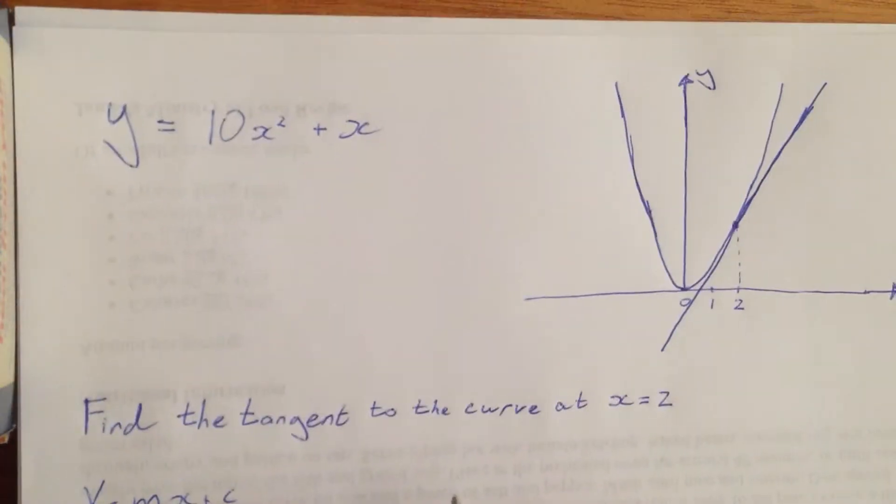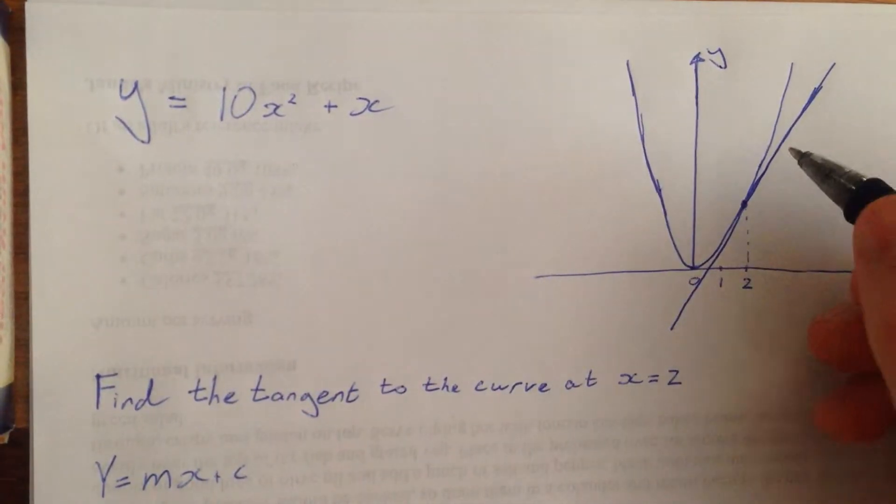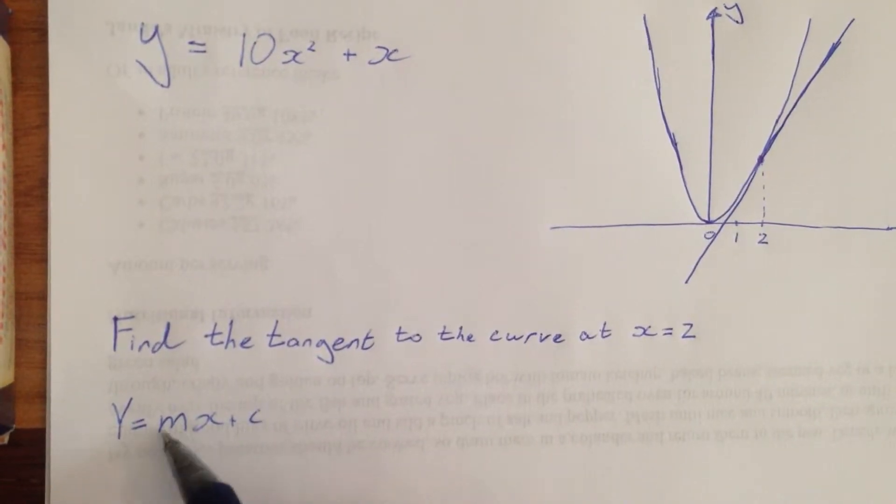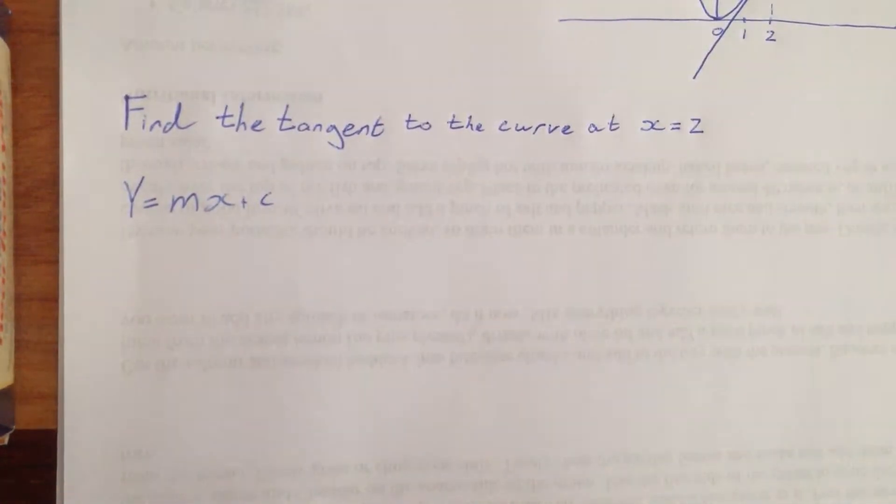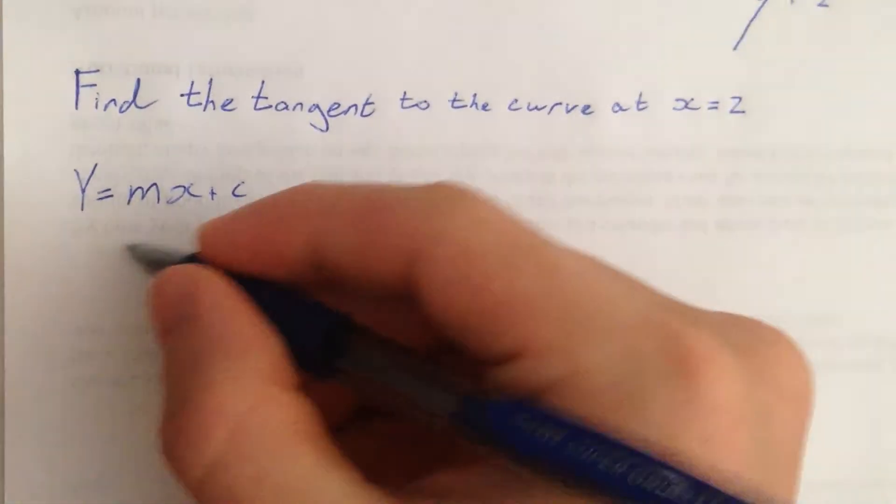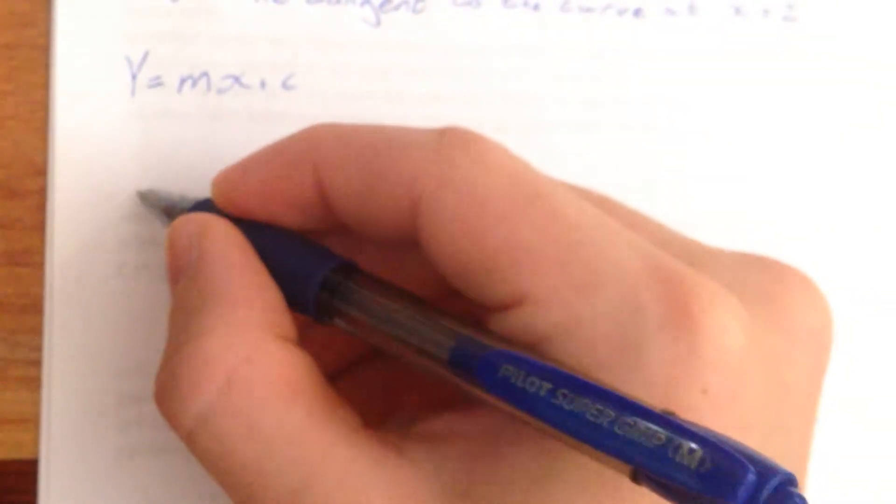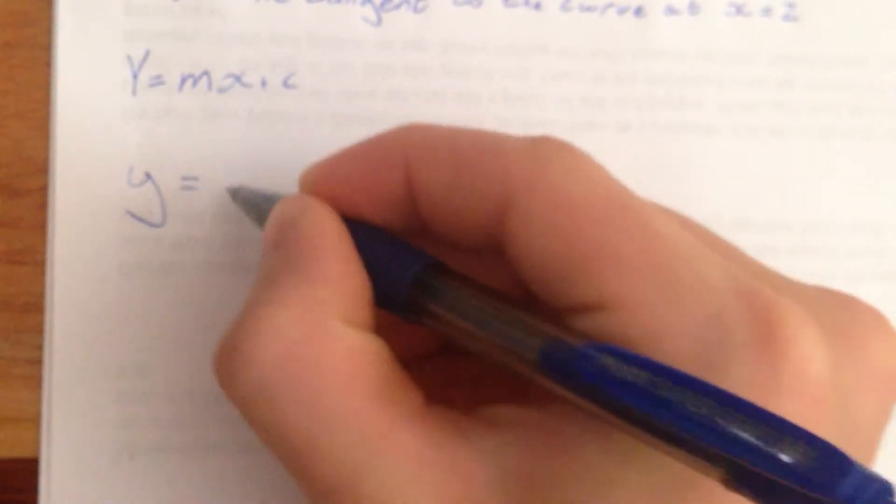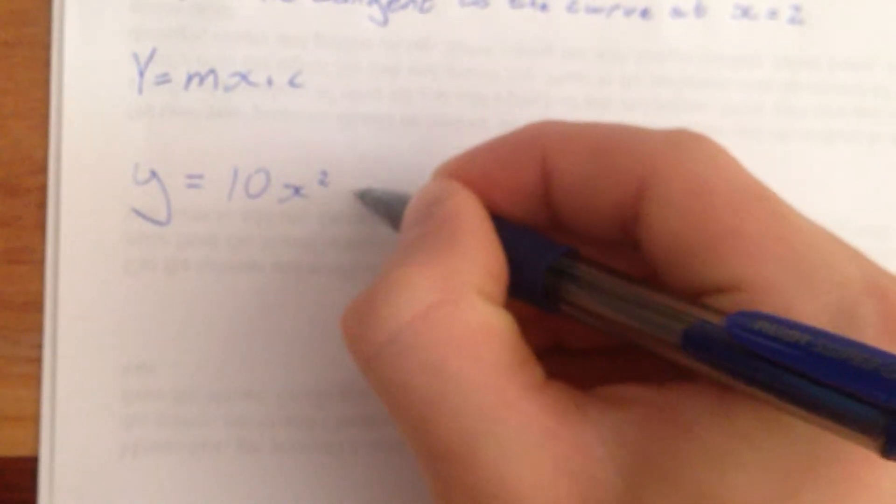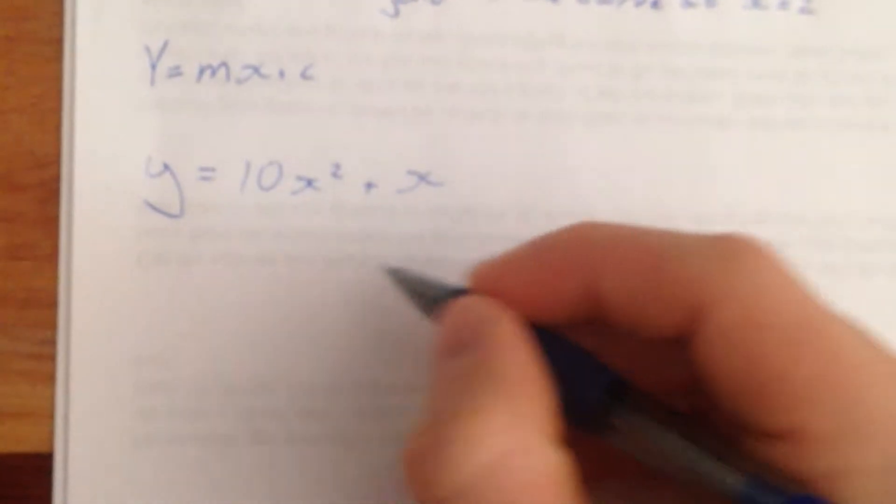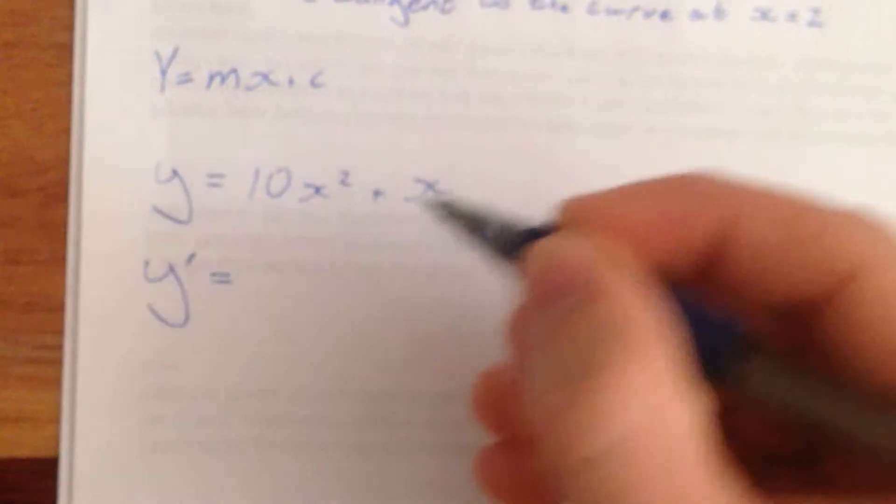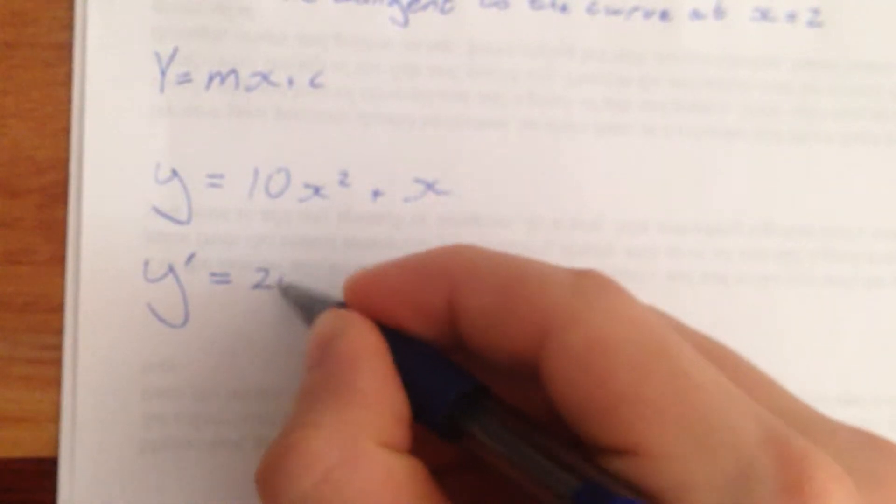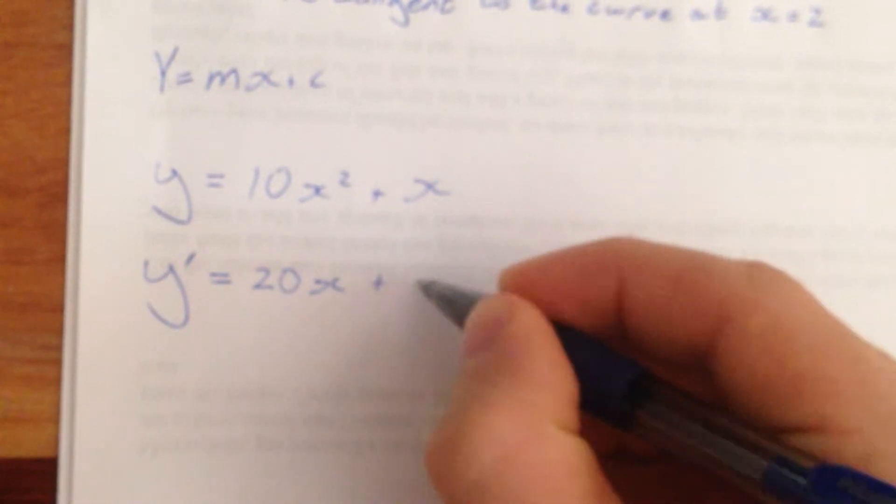So to figure out that first bit of information, which is the gradient, to get this part of our tangent line, I'm going to write this down again. So the function is y equals 10x squared plus x. Therefore the gradient function, or the derivative, y prime equals 20x plus 1.